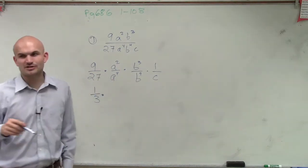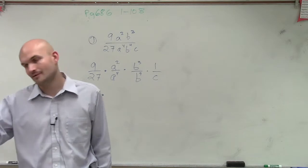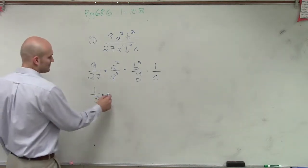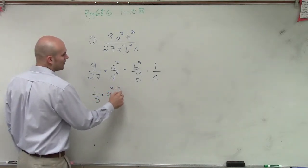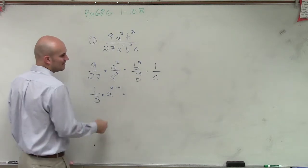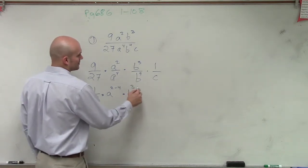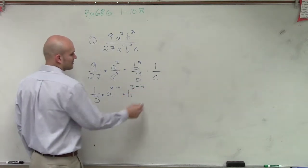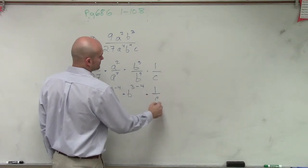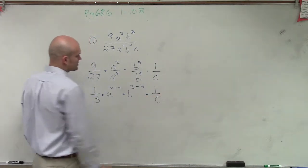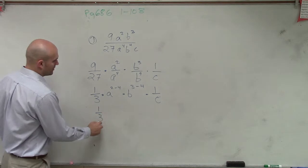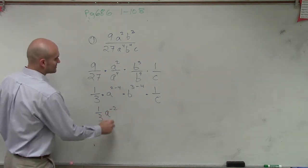And then what happens when you divide exponents? You're going to subtract the powers. So we have a squared minus 4. And then for b, we have to do the same thing. And we'll just leave 1 over c. So now we have 1 third a negative squared.